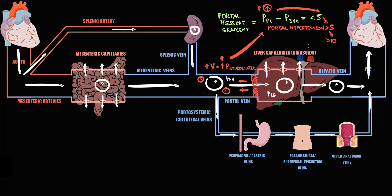At this point, the combination of portal hypertension and obstruction to flow into the liver sinusoids forces a larger volume of blood to go into the portosystemic collateral vessels — also called portosystemic shunts. The problem is that the more severe portal hypertension becomes, the higher the volume of blood going into the portosystemic collateral vessels, and the higher the volume of fluid inside these vessels, the more distended they become.